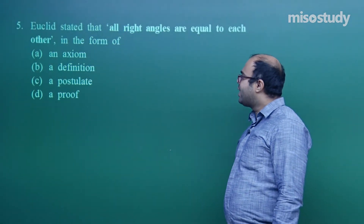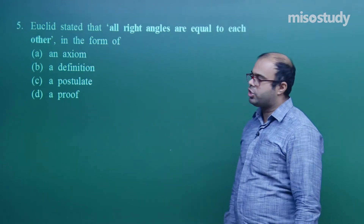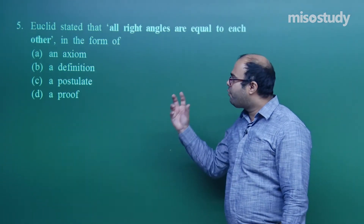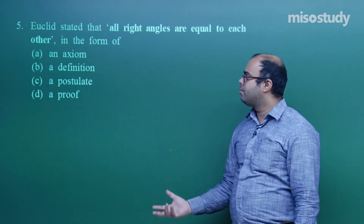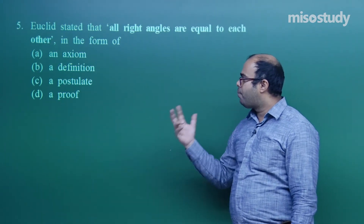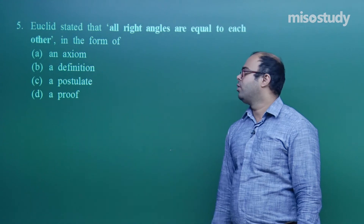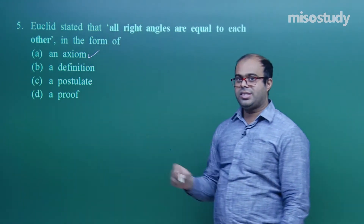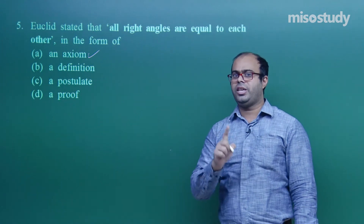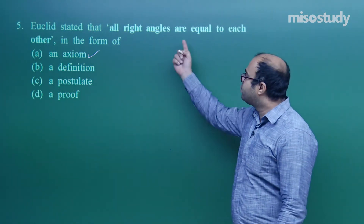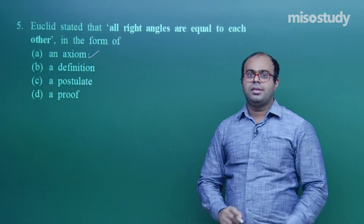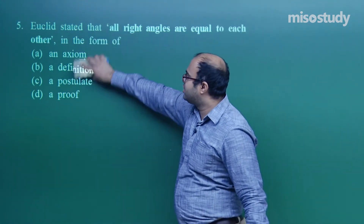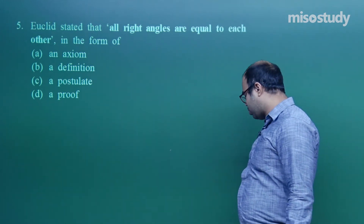Question five: Euclid stated that all right angles are equal to each other — all 90-degree angles are equal to each other — in the form of an axiom, a definition, a postulate, or a proof? We studied this in axioms. We studied three things in this chapter: definition, axiom, and postulate. The statement that two right angles are always equal was studied as an axiom, so option A is correct.